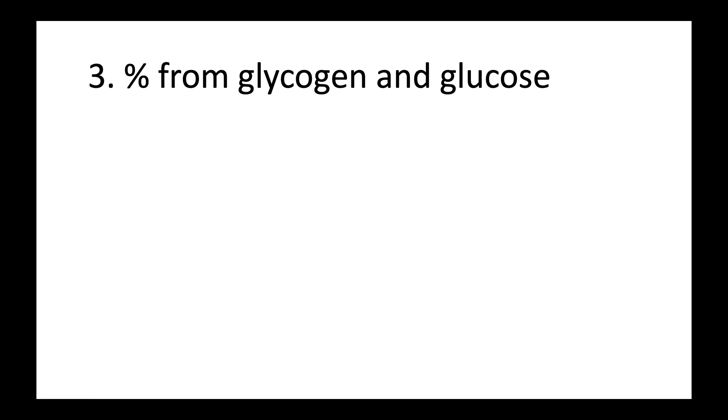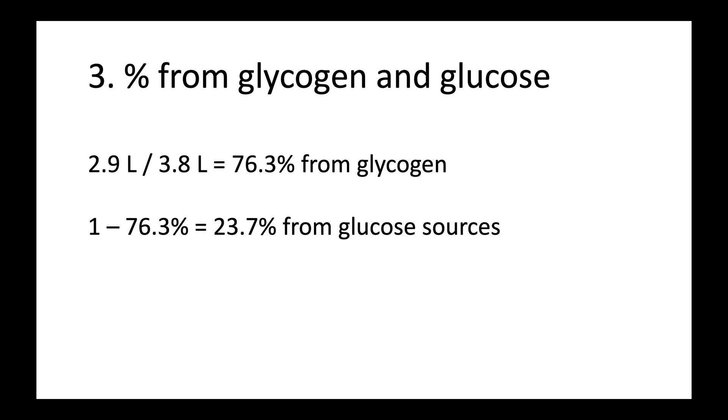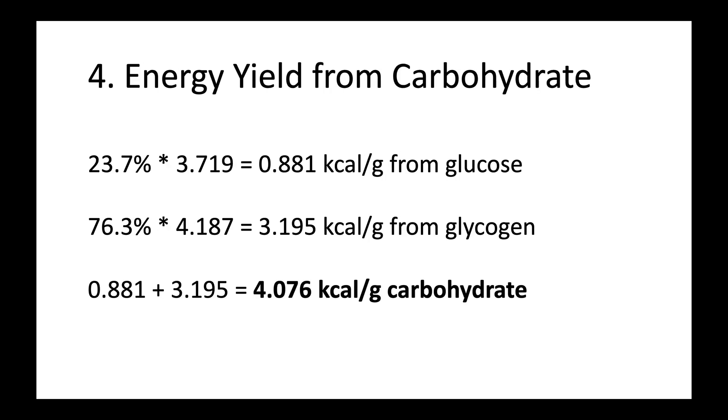So that takes us to step three, getting the percentage from glycogen and glucose. We divide the current VO2, or 2.9 liters, by the VO2 max of 3.8 liters to get 76%, leaving the balance as glucose. When we know the percentage from glycogen and glucose, we can then calculate the adjusted energy yield per gram of carbohydrate. So we have 23.7% from glucose, and we know the yield is 3.719. So that gets us to 0.881 calories per gram from glucose. We do the same for glycogen, sum them up, and it works out to 4.076 calories per gram of carbohydrate.